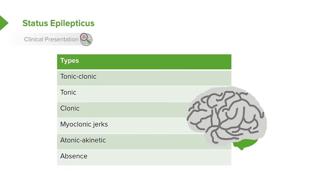Absence seizures are unique in that children will, what we call, space out. There is a complete lack of awareness of the world, and then they pop right back in again without any post-ictal phase. It may be so subtle that children don't even know they're doing it, but are simply confused in the classroom because for them the teacher is jumping forward in time.